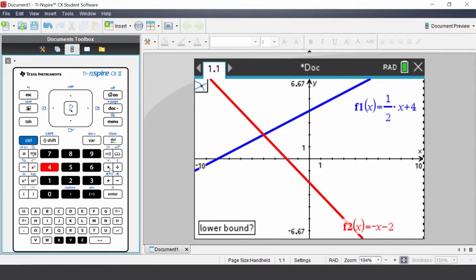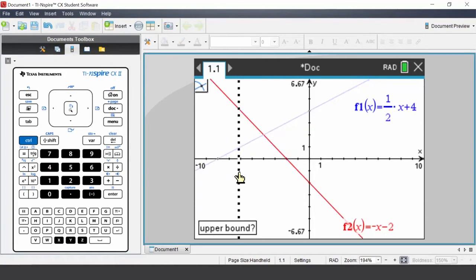As I am using the computer software, I will use the mouse to move the lower bound to a point less than negative 4. On the calculator, use the touchpad to move the upper bound to be greater than negative 4 and press the center of the touchpad. As I am using the computer software, I will use the mouse to set the upper bound. The point of intersection is negative 4, 2.